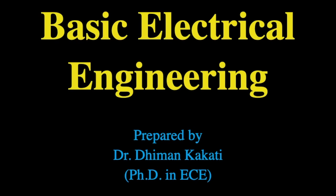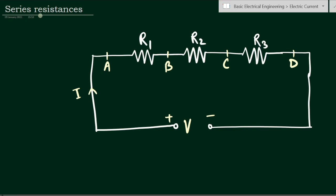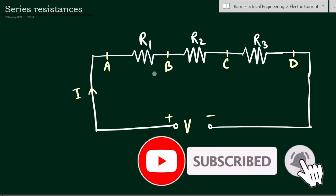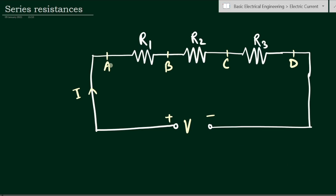Hello everyone, this is Dr. Dhiman. In this video we will learn about resistances connected in series. I have considered three resistances R1, R2, and R3, and marked four points A, B, C, and D such that point AB is across resistance R1, BC is across resistance R2, and CD is across resistance R3. We assume some voltage V is applied across these resistances connected in series.